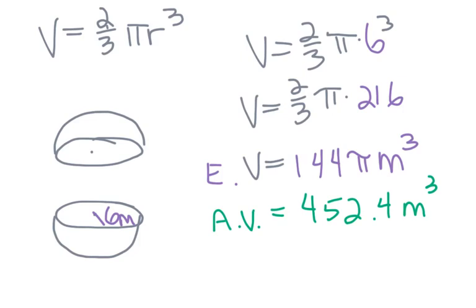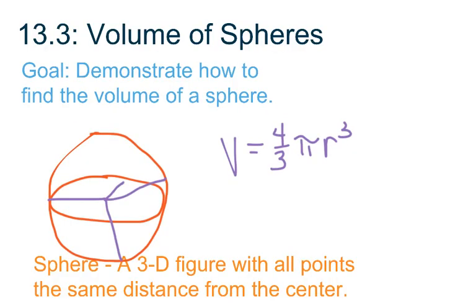And that's it. Instead of multiplying by 4 thirds for a full sphere, it's 2 thirds when using a hemisphere. That concludes our lesson. Hopefully you're now able to demonstrate how to find the volume of a sphere and a hemisphere, and also find the radius given the volume. Write down any questions and concerns so we can address those in class.